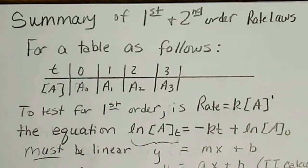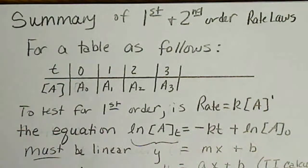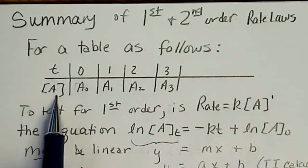In summarizing testing for whether or not a rate law is first-order or second-order, we could see a table like the following, where we're given time, that could be seconds or minutes, and we're given different concentrations of a reactant A.